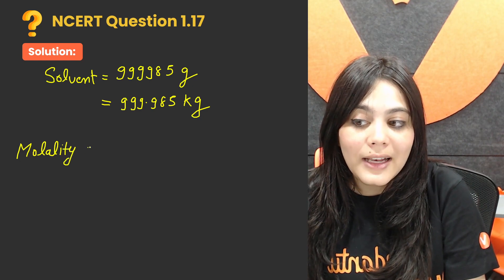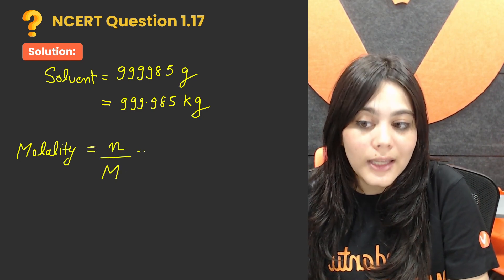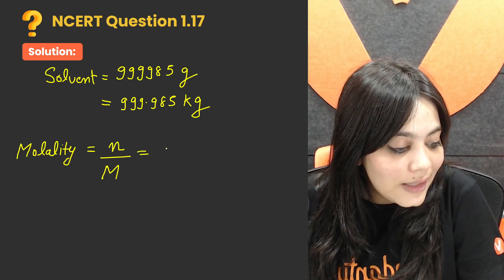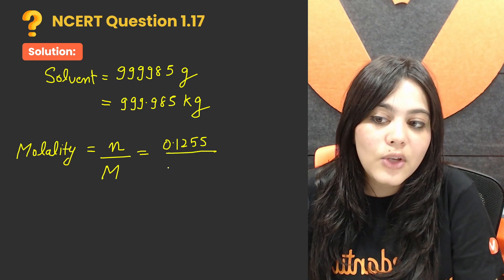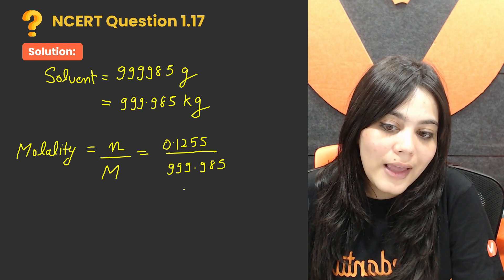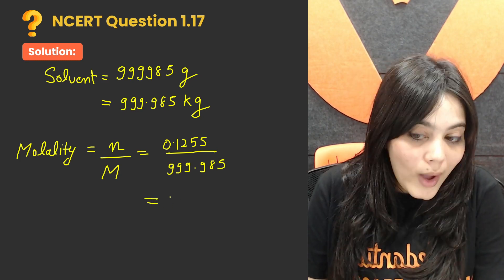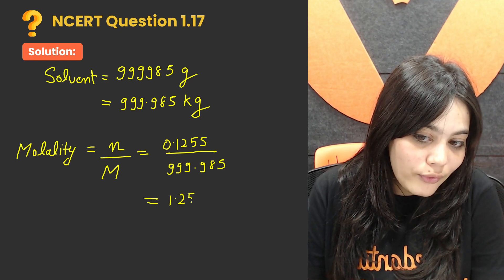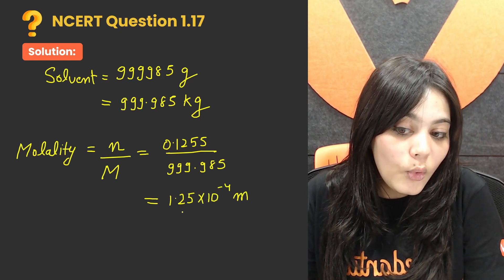Now molality. What was it? Number of moles of solute upon mass of solvent in kg. Moles are 0.1255, mass of solvent in kg is 999.985. My molality is 1.25 into 10 raised to the power minus 4 molal solution.